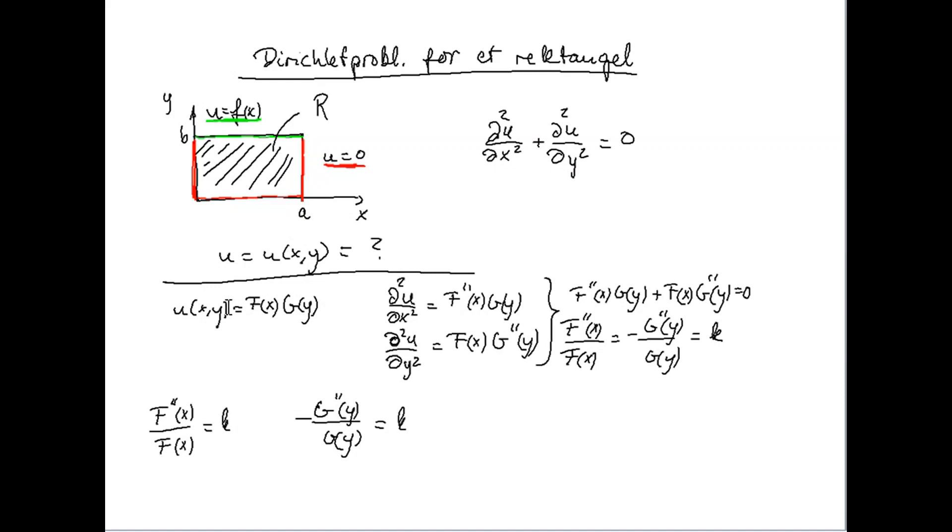We write u of x, y equal to a product of two functions, one function which is only dependent of x, and another which is only dependent of y. So recall that x is in this direction, and y is in this direction.